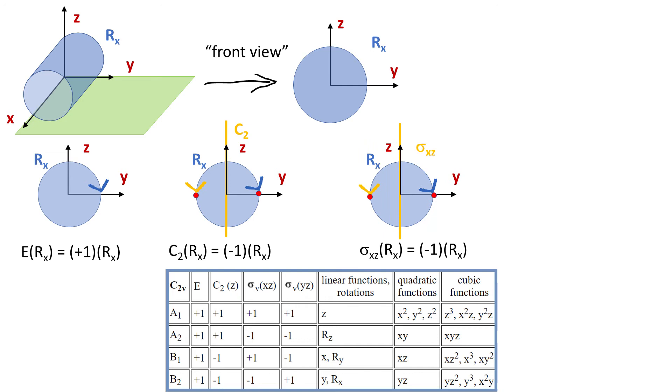It also changes when we do xz reflection and notice that in this perspective sigma xz looks like a line. And then sigma yz does not affect the direction of rotation because it cuts the cylinder along the plane of rotation.